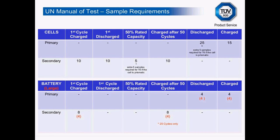The sample requirements table shows the number of samples needed depending on whether it's a cell or battery and whether primary or secondary. Tests T1 to T5 are performed on the same samples, but T6, T7, and T8 may use different sets of samples. For prismatic cells, an additional five samples are required for the impact test T6 because five samples are tested along the longitudinal axis and another five along the other axis. For larger rechargeable batteries over 12 kg, only four samples are required instead of eight, and samples are cycled only 25 times rather than 50.